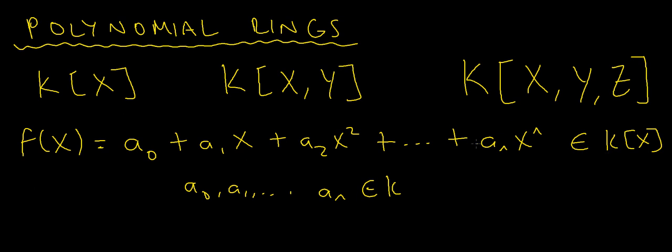And so it's because of that reason that k[x] is a ring. It forms a ring under the operations of addition and multiplication, and you can verify that it satisfies the axiomatic properties of a ring. So that's what k[x] means.